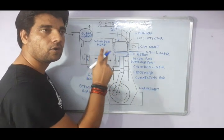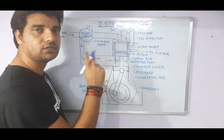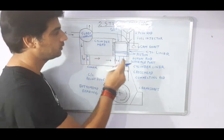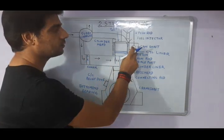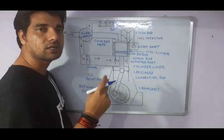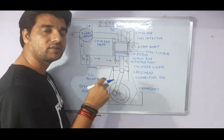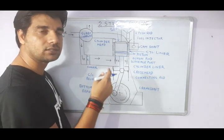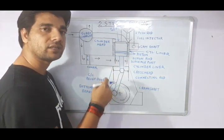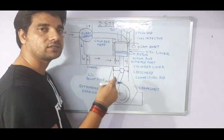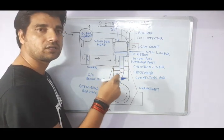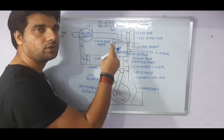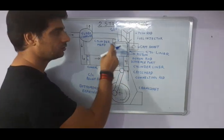The rocker arm then operates the exhaust valve of the engine — all these things are interconnected. The camshaft is internally connected with the crankshaft of the engine by a chain drive or gear mechanism. So when the crankshaft rotates, the camshaft starts rotating, it operates the push rod, the push rod operates the rocker arm, and the rocker arm operates the exhaust valve.